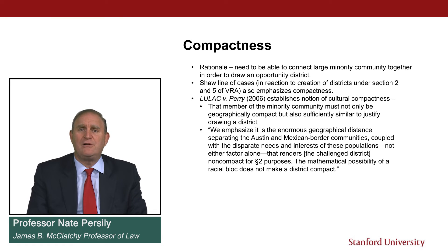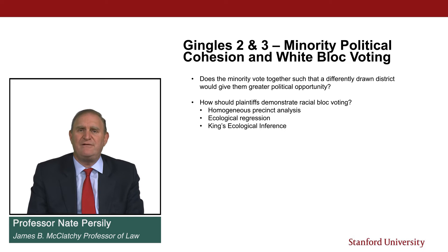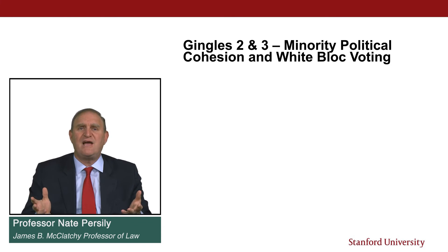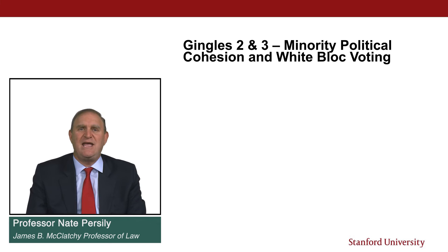That brings up minority political cohesion — the second Jingles prong. A minority community must be politically cohesive, meaning they tend to vote together for particular candidates. If the minority community is fractured and voting for all different types of candidates, it doesn't matter if you draw them into a district together — there is no minority candidate of choice. Redistricting would not be to blame for their lack of political success; it's simply that they are not cohesive as a political community.